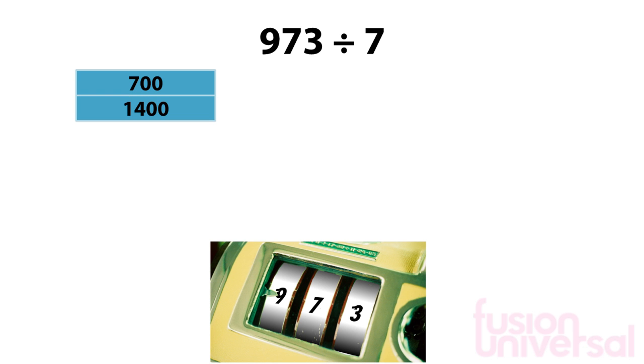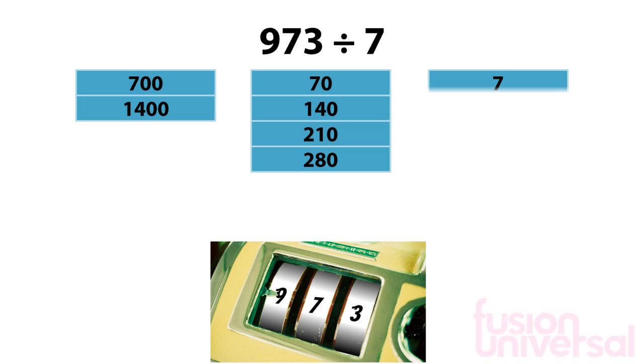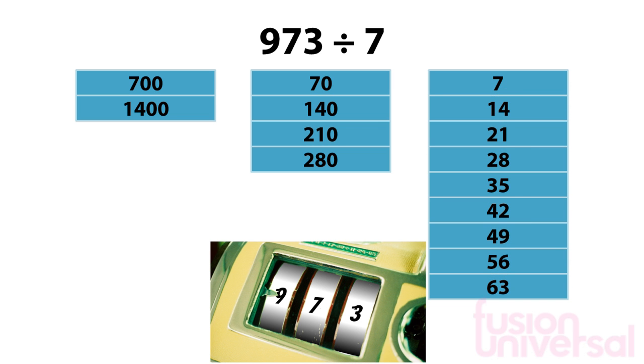To help us do this, we will look at the 7 times table, the 70 times table, and the 700 times table.